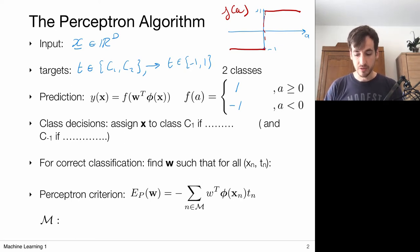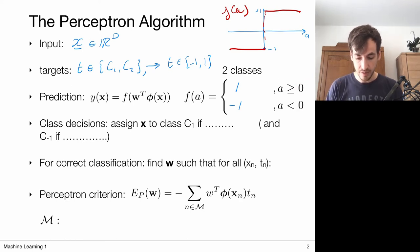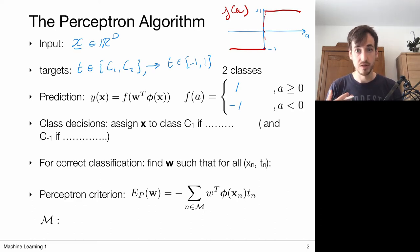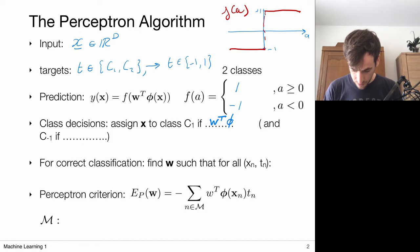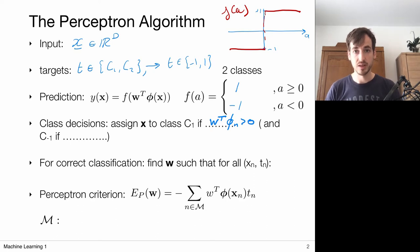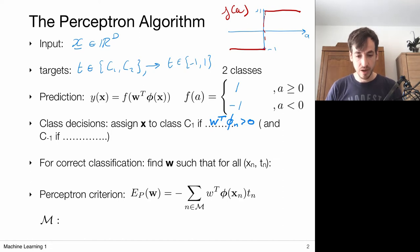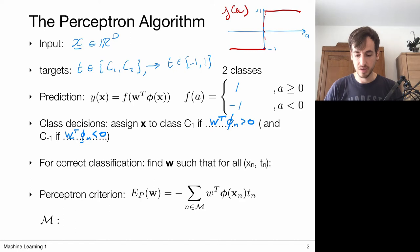Because my activation function really focuses on the distinction between a larger than zero or smaller than zero, my classification essentially focuses on: if I have a new data point x, I'm going to assign it to class one whenever this scalar product with my feature vector is bigger than zero — then it belongs to class one, because the activation function evaluates to one. And the other way around: if my scalar product with my feature vector is smaller than zero, I assign it to the negative class.